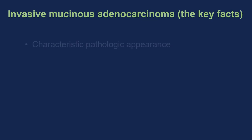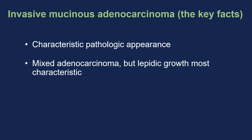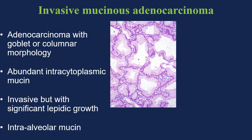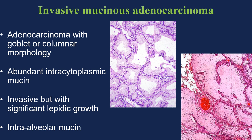The key facts for invasive mucinous adenocarcinoma: it has a characteristic histologic appearance — usually a mixed adenocarcinoma but often with significant lepidic growth where the tumor grows on the surfaces of the alveolar spaces. It has unique imaging features. It recurs relatively commonly, but the majority of recurrences are in the lung; recurrence within lymph nodes and outside the lung occurs much less frequently than with non-mucinous invasive adenocarcinoma. The typical pathology shows goblet or columnar cell morphology with lots of intracytoplasmic mucin. One clinical presentation is bronchorrhea, where patients cough up clear or whitish sputum in large amounts.